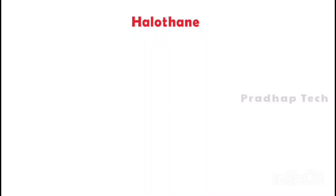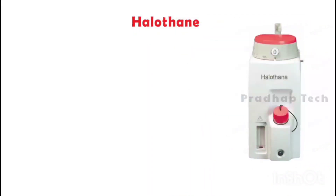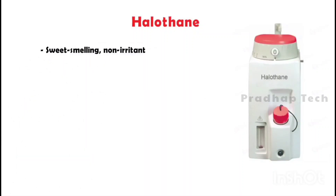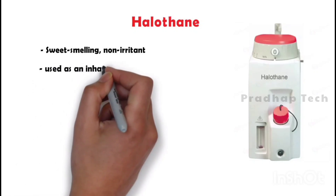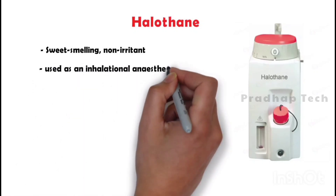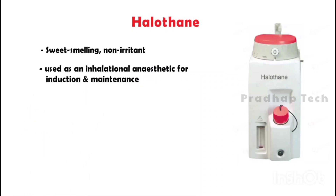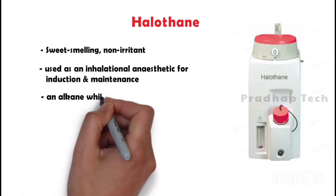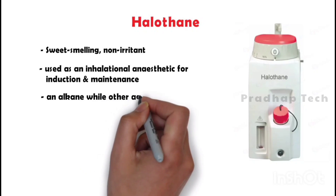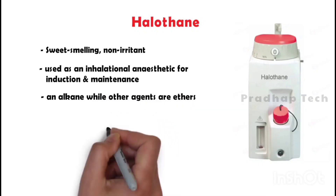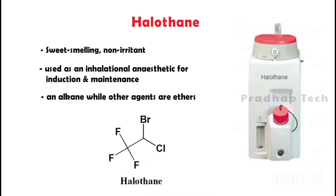Halothane is a sweet-smelling, non-irritant agent, which makes the halothane induction smoother. It is used as an inhalational anesthetic for induction and maintenance of general anesthesia. Halothane is an alkane while other agents are ethers. Halothane is the only agent which contains chloride, fluoride, and bromide.